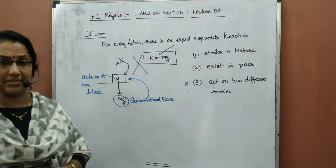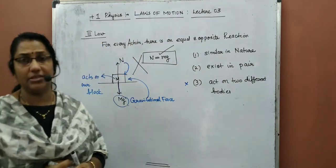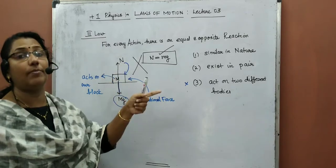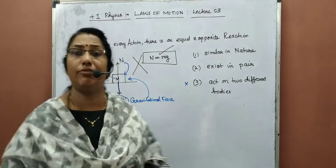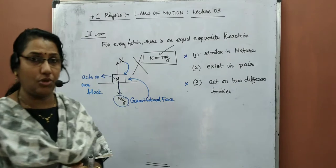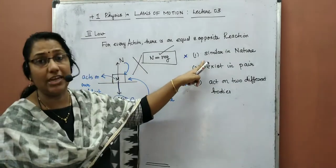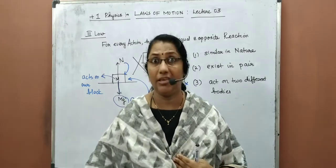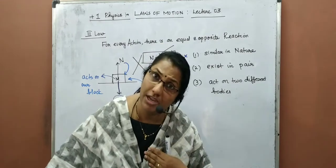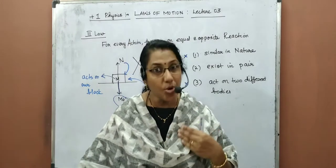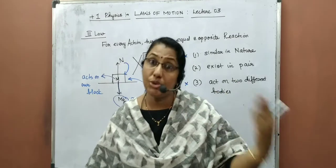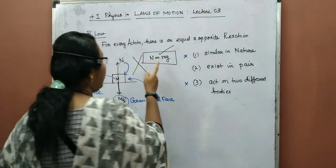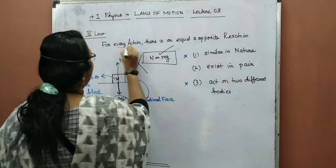They are acting as a pair and they exist in pairs. But are normal reaction and gravitational force similar in nature? Never — they are two different types of force. So it does not satisfy the first condition either. Also, they are not acting on two different bodies. Both forces are acting on the same body. That is why N equal to Mg is not at all our action-reaction pair.